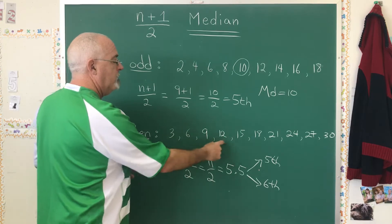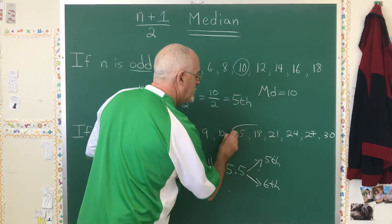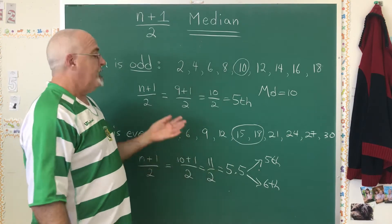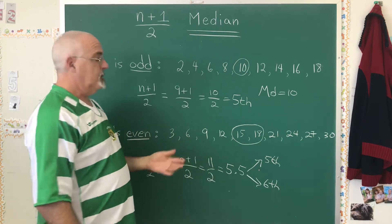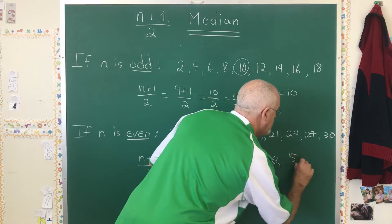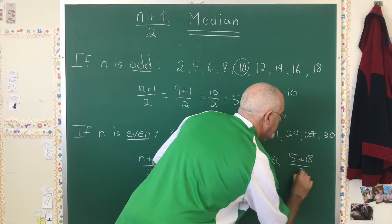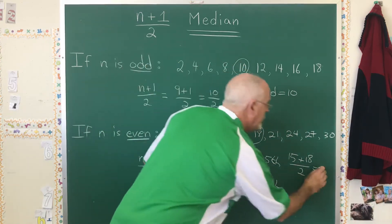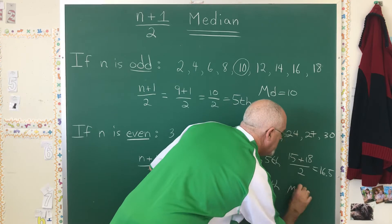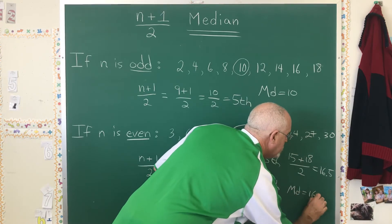Counting 1, 2, 3, 4, the fifth value and the sixth value are the 15 and the 18 in this case. The median is the average of those. So I have one more calculation to do. 15 plus 18 over 2 finds the average of 15 and 18 and gives us 16.5. In this case, our median is 16.5.